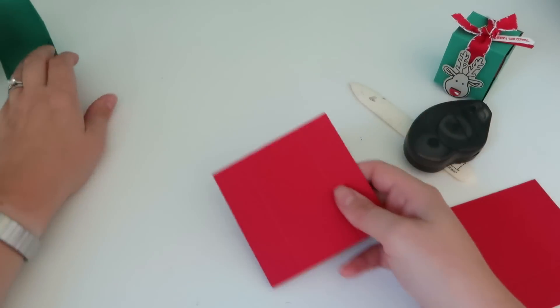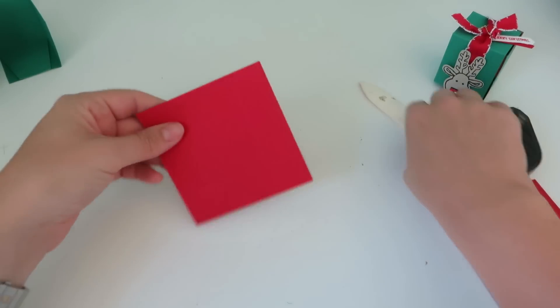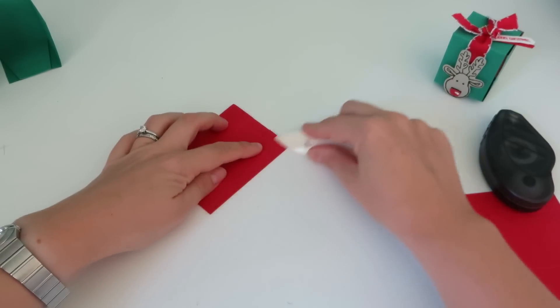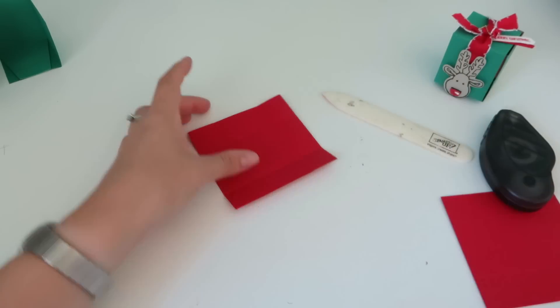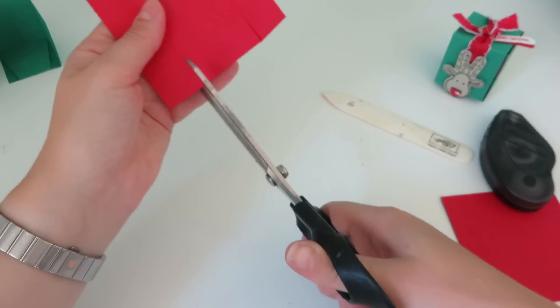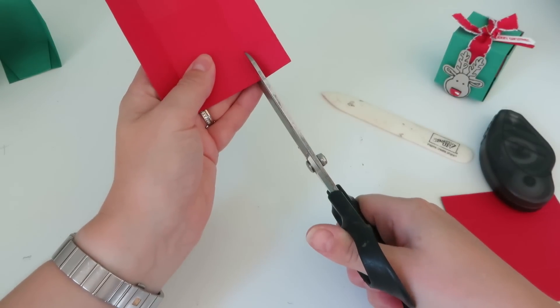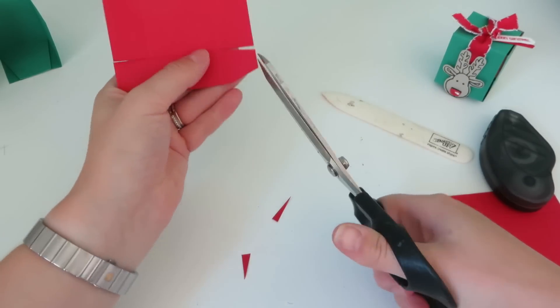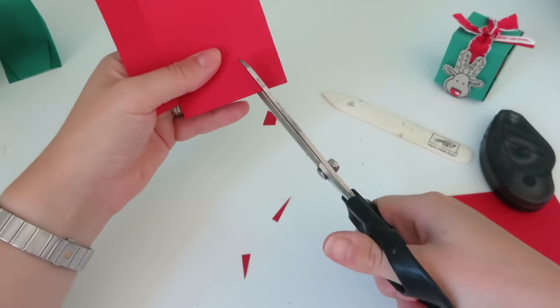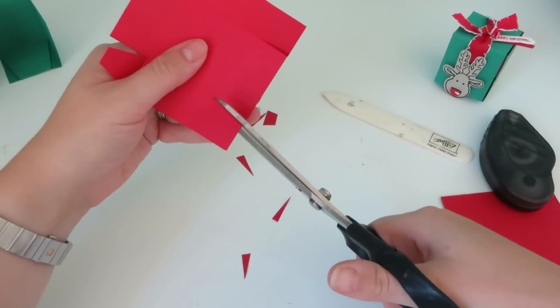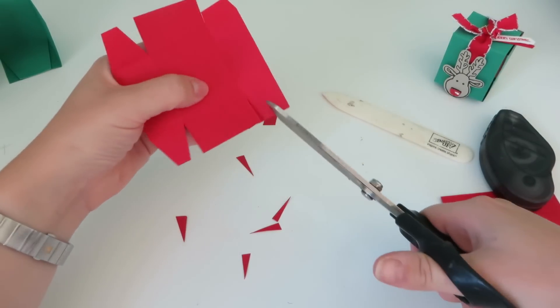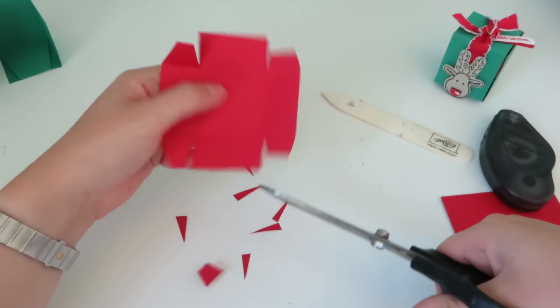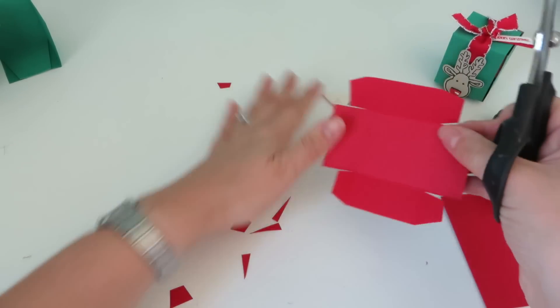So we need to make our little drawers to go inside. This is the easiest box you'll ever make. Fold up and burnish along those score lines. And then we are just going to chop up our four corners like this. And then just quickly notch those out.